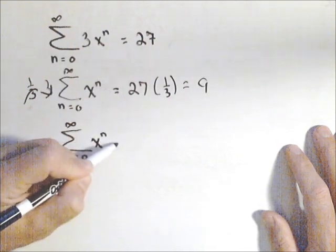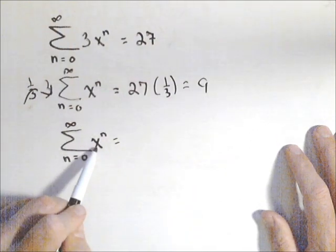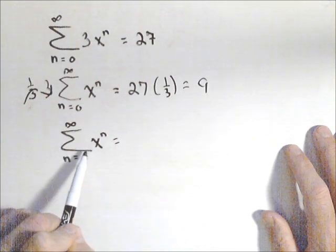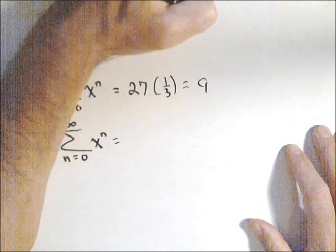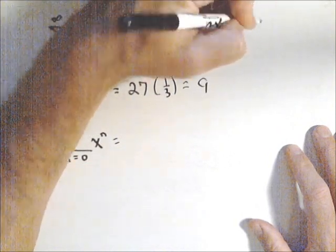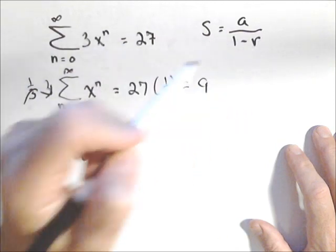This is a geometric series, and it's infinite, so that converges. Remember our formula for a geometric series for the sum is the first term over one minus the common ratio.